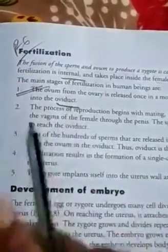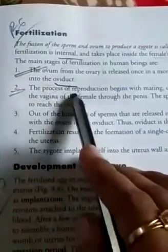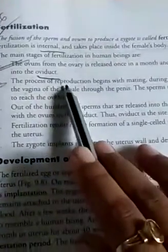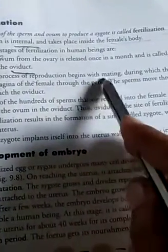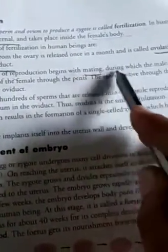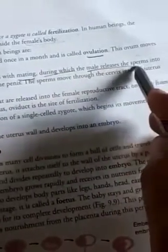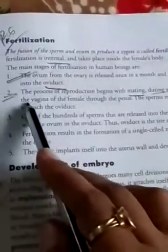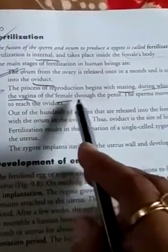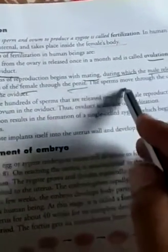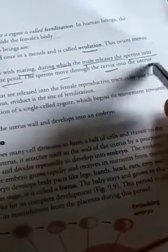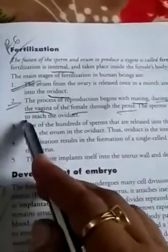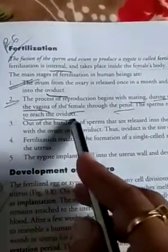Second, the process of reproduction begins with mating, during which the male releases sperms into the vagina of the female through the penis. These sperms move through the cervix into the uterus to reach the oviduct.